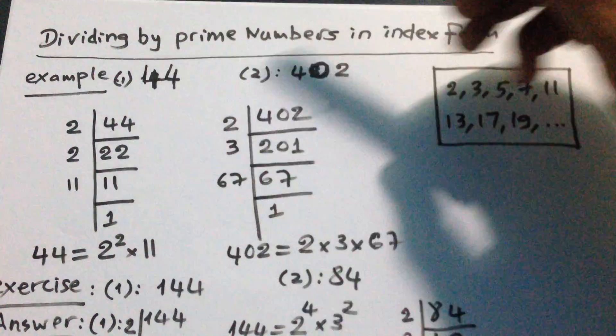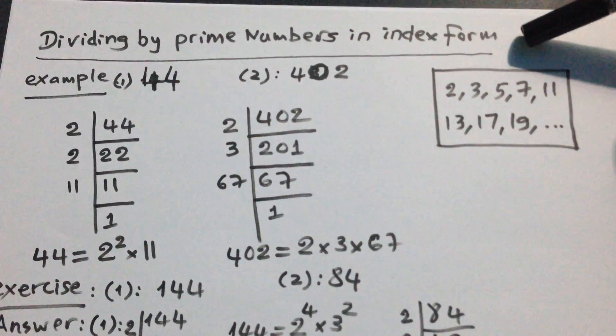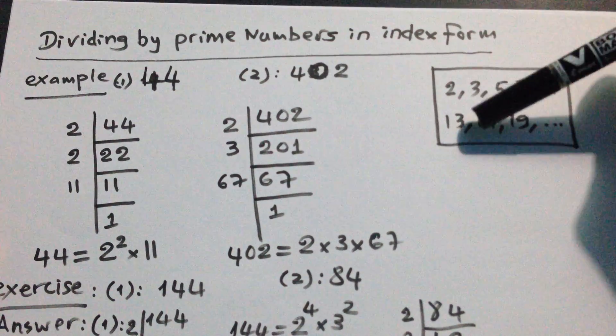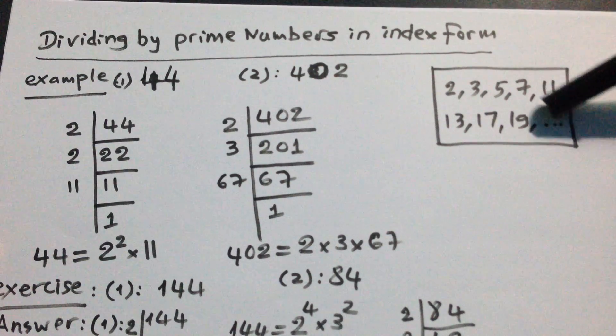I review you. When we divide by prime numbers in index form, the prime number must be 2, 3, 5, 7, 11, 13, 17, 19.